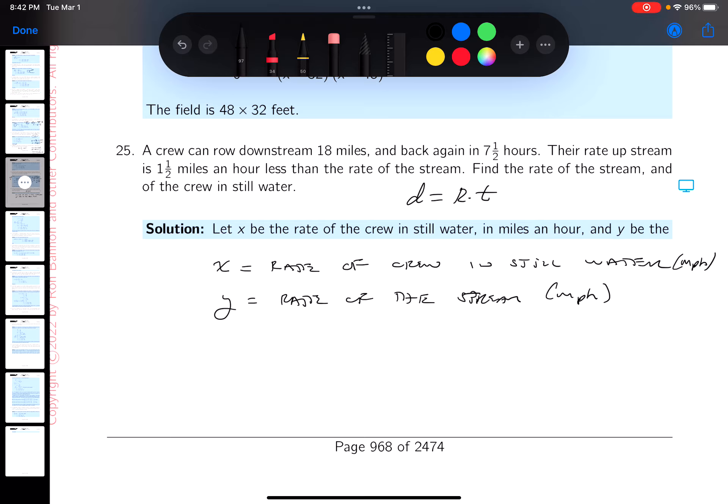The first thing I know is that the crew can row downstream and upstream in 7.5 hours, which means the total time is 7.5 hours. It's 18 miles, and if he's going with the current the rate would be X plus Y.